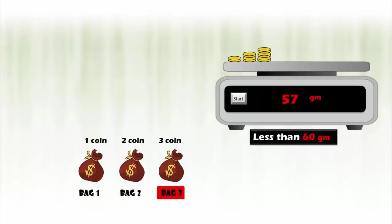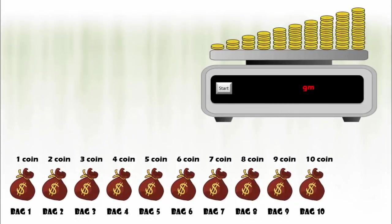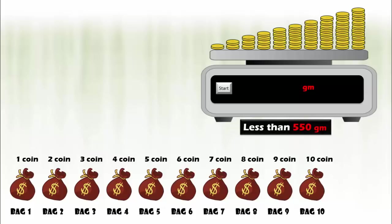Apply the same procedure to identify the defective bag out of ten bags. The expected total weight in this case would be less than the ideal total weight of 550 grams, as we have 55 coins placed. So if you get 549 grams displayed, then the defective bag is bag 1.